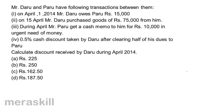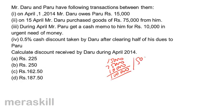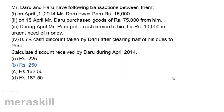Discount received by Daru: Daru owes 15,000, then purchased goods for 75,000, and Paru gets a cash memo for 10,000. Total amount Daru has to pay Paru is 1,00,000. He clears half his dues, so 50,000 is paid. After clearing half his dues, he gets 0.5% discount: 0.5% of 50,000 = 250. Correct answer B, Rs. 250 is the discount received by Daru during April 2014.